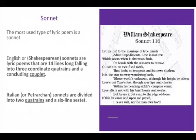The most used type of lyric poem is a sonnet, and there are two types of sonnets: Shakespearean and Petrarchan, which we will talk about also when we read our Shakespearean drama. Shakespearean sonnets are lyric poems that are 14 lines long, falling into three coordinate quatrains and a concluding couplet. So a quatrain is four lines — three quatrains gives us 12 lines, and then we have a couplet which is two lines. Within that quatrain we have a rhyme scheme of A, B, A, B.